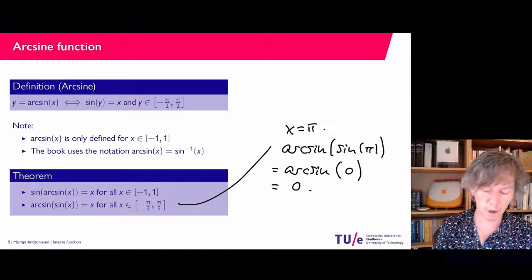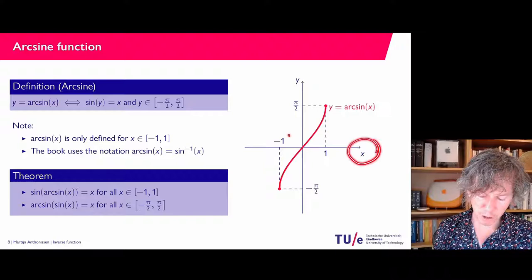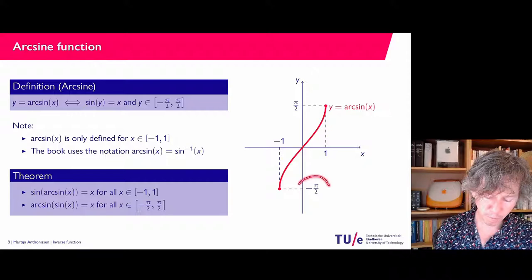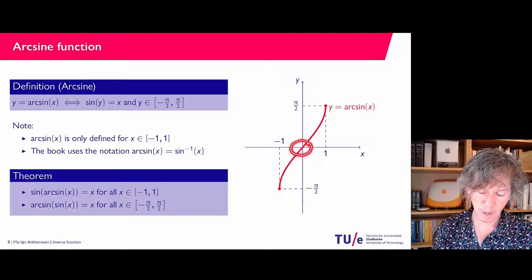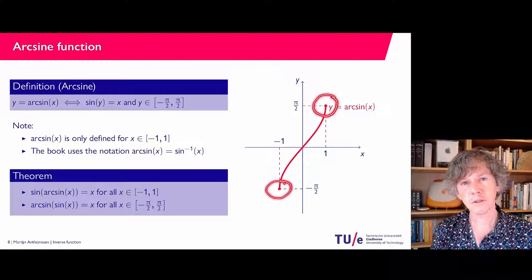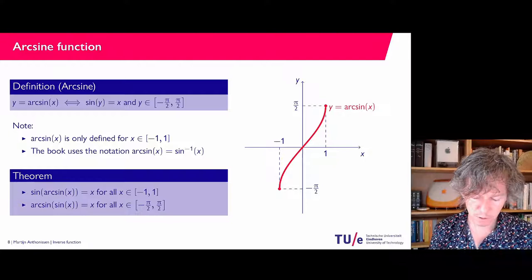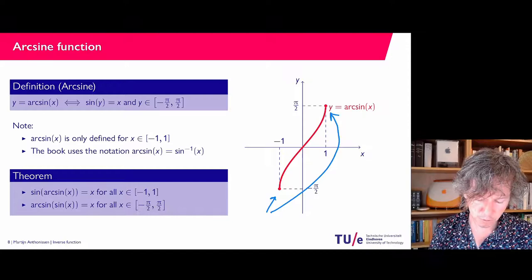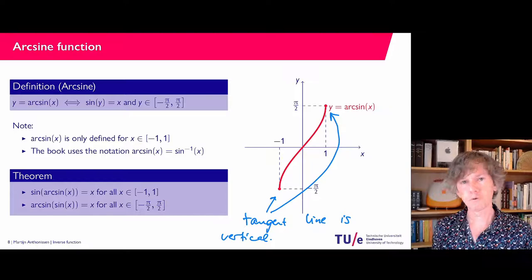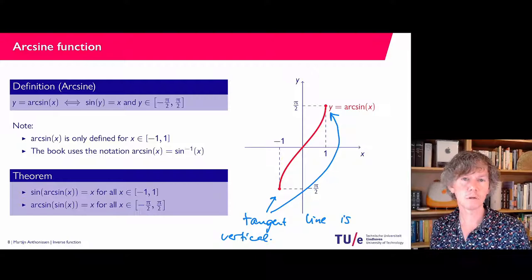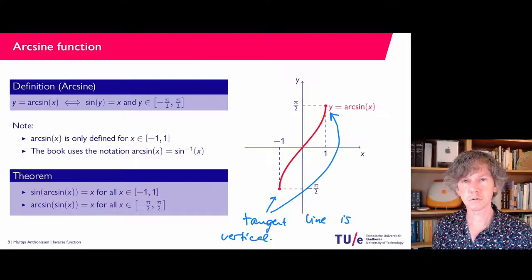Finally, the graph of the arcsine. If you take the graph of the sine function and mirror it in y equals x, you get this function. It is defined for x values between minus one and plus one. The corresponding y values go from minus pi over two to pi over two — that's the domain we chose for the sine function. Arcsine of zero equals zero. At the left and right endpoints of the domain you see that the tangent line is vertical, which means when we consider the derivative of the arcsine in a future video, the derivative will not exist at those endpoints because the slope of the tangent line is infinite.